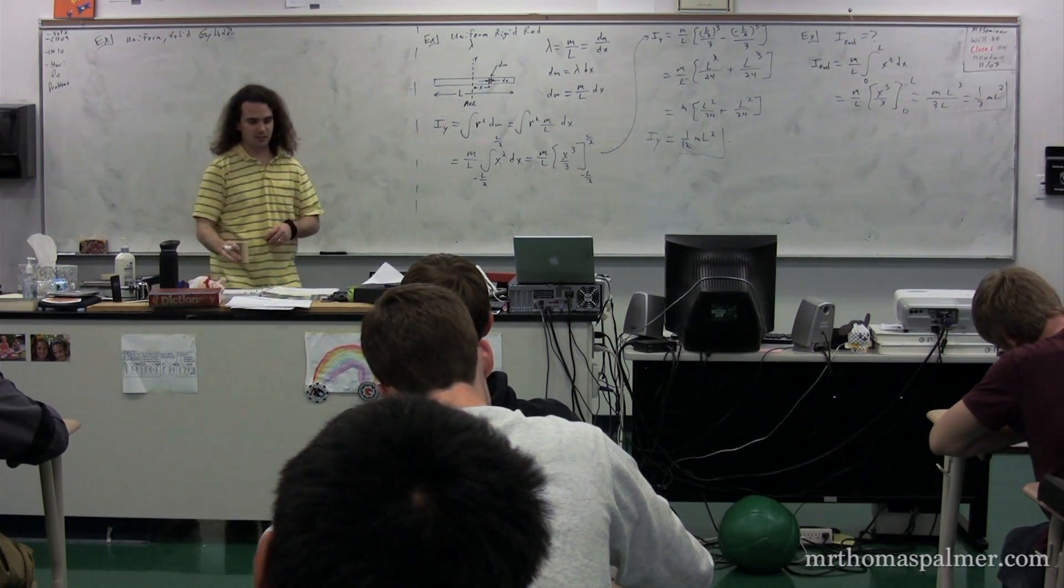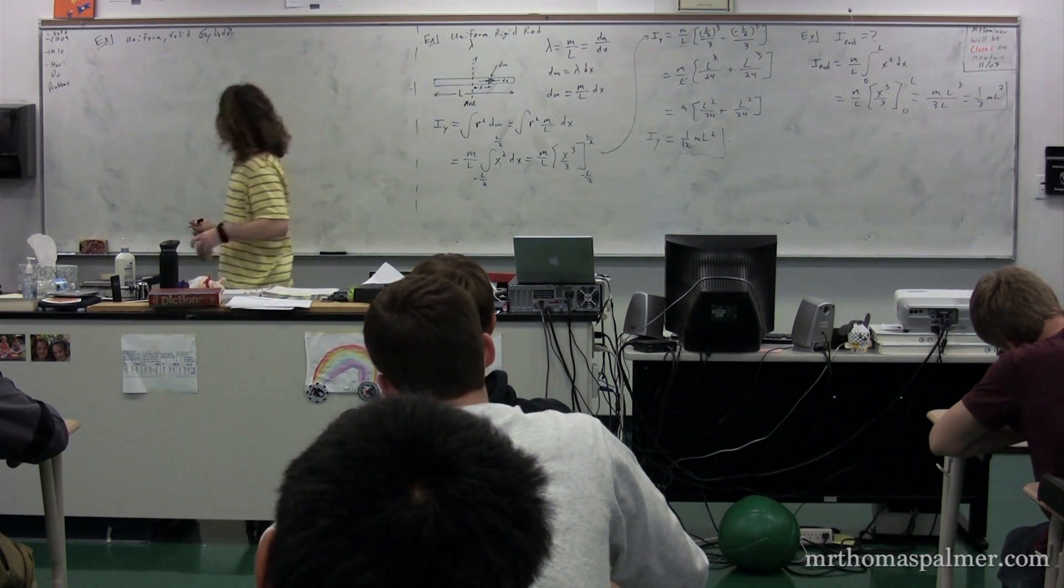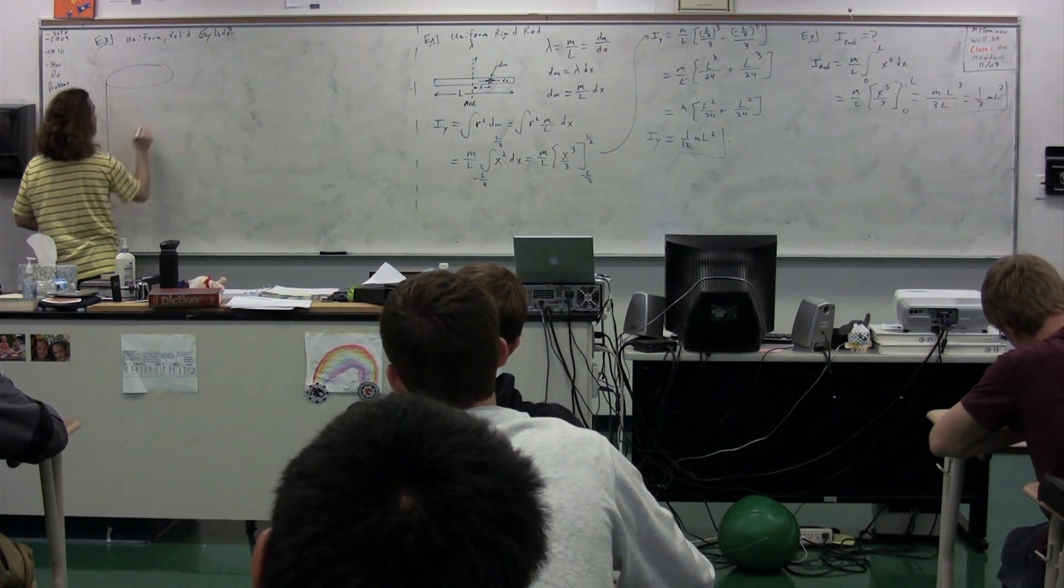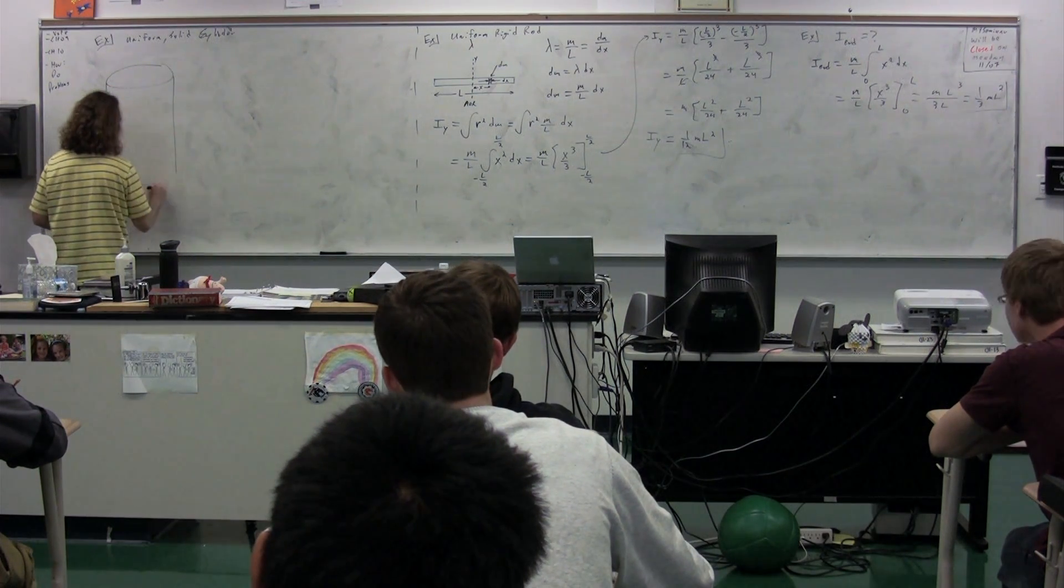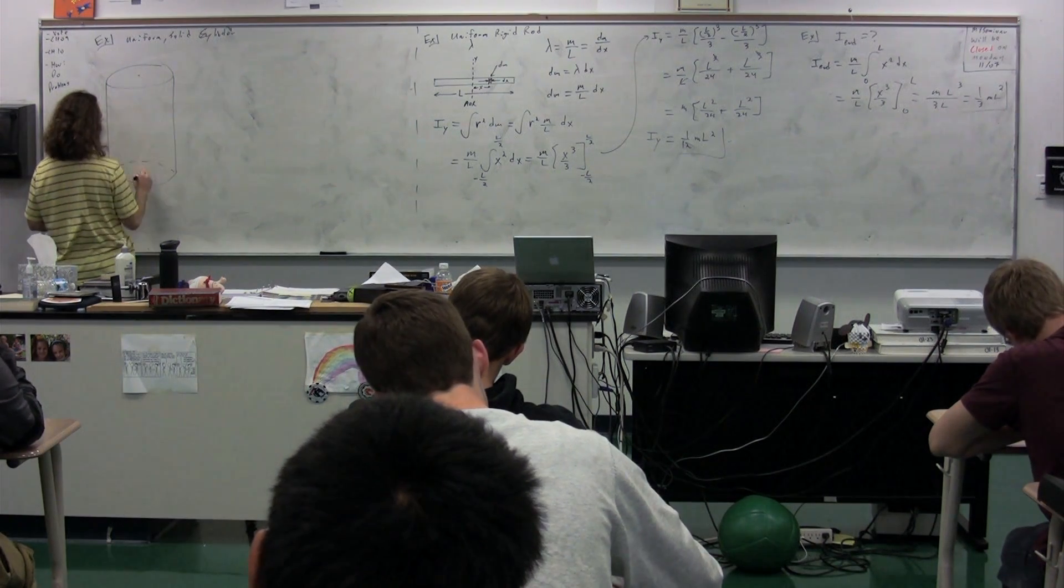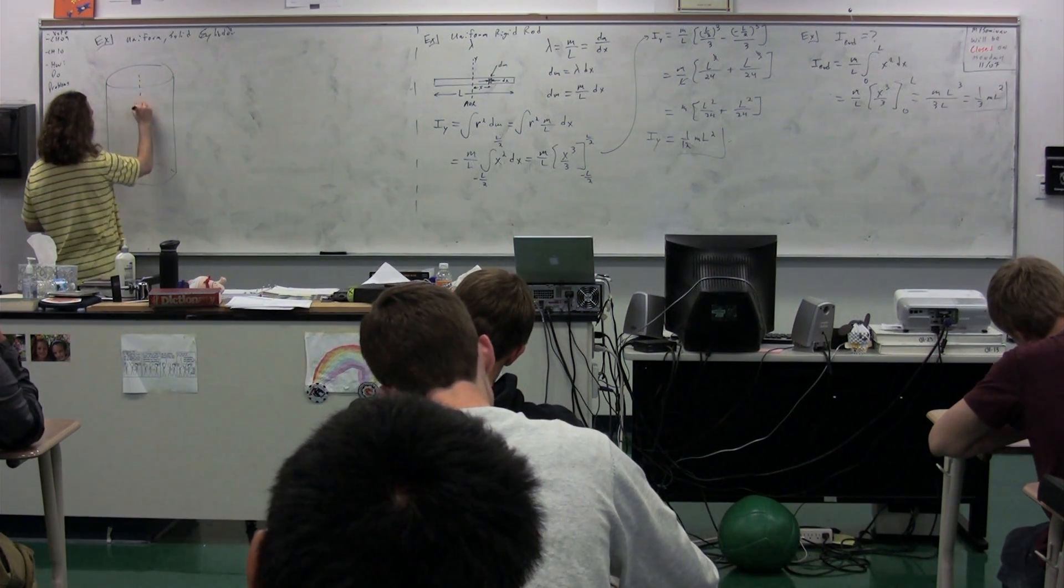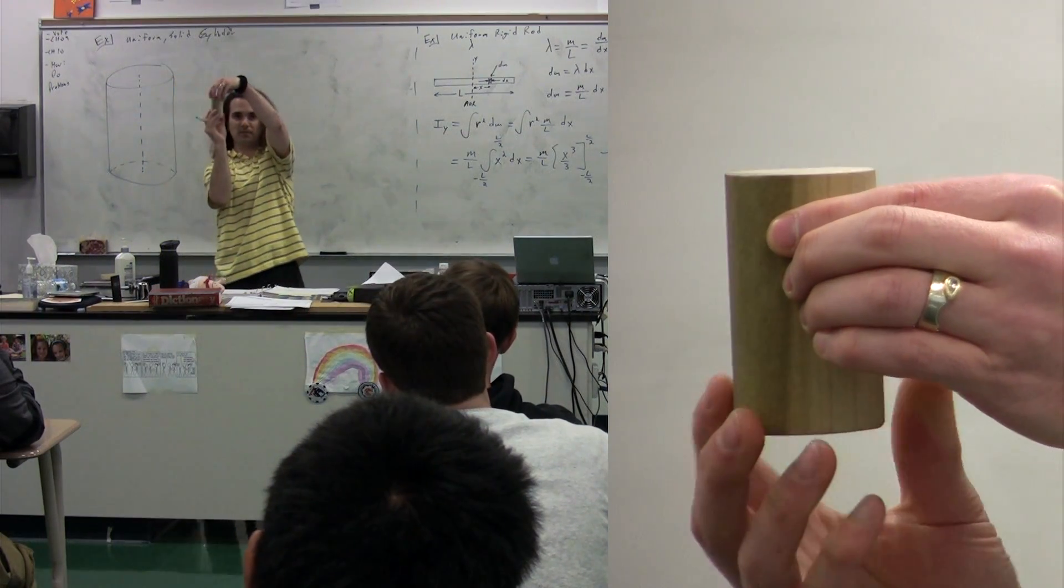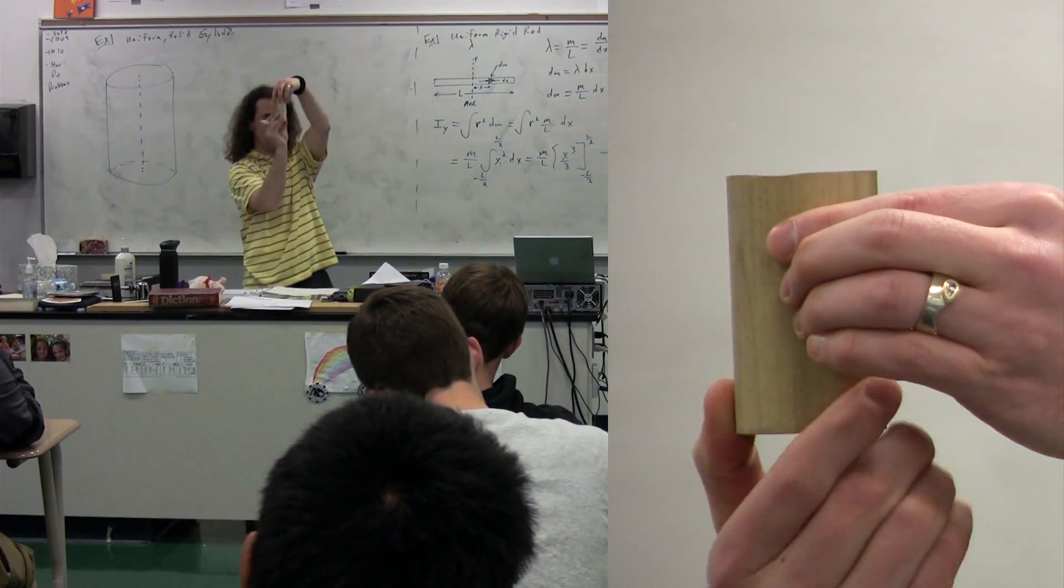A uniform solid cylinder. Now, when we look at this object, it looks like this. And we're going to figure out the moment of inertia of rotating it around this axis. So we're going to take it and rotate it this way, around this axis.